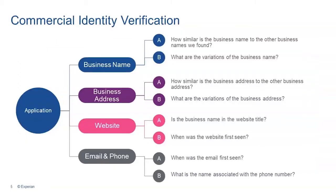I'm going to cover this slide quickly because I used it in the last session. This is the strategy I shared in the last video where we compare the application information against the data we have on file — bureaus like Experian. The more you're able to verify, corroborate, and link things together, the stronger your trust should be that this is a legitimate business and applicant. Against third-party fraud, though, this approach — while still important — is no longer effective or scalable on its own. You need to start thinking about the next phase, bringing in more analytical intelligence to combine all the disparate pieces in an automated way.